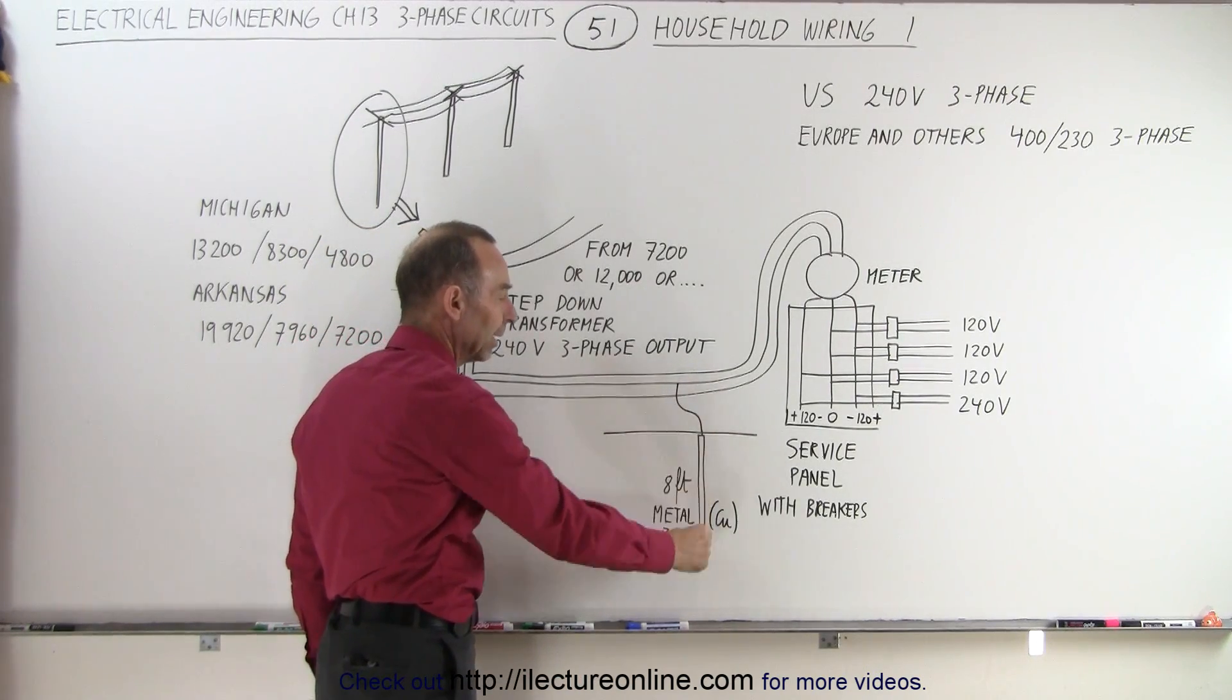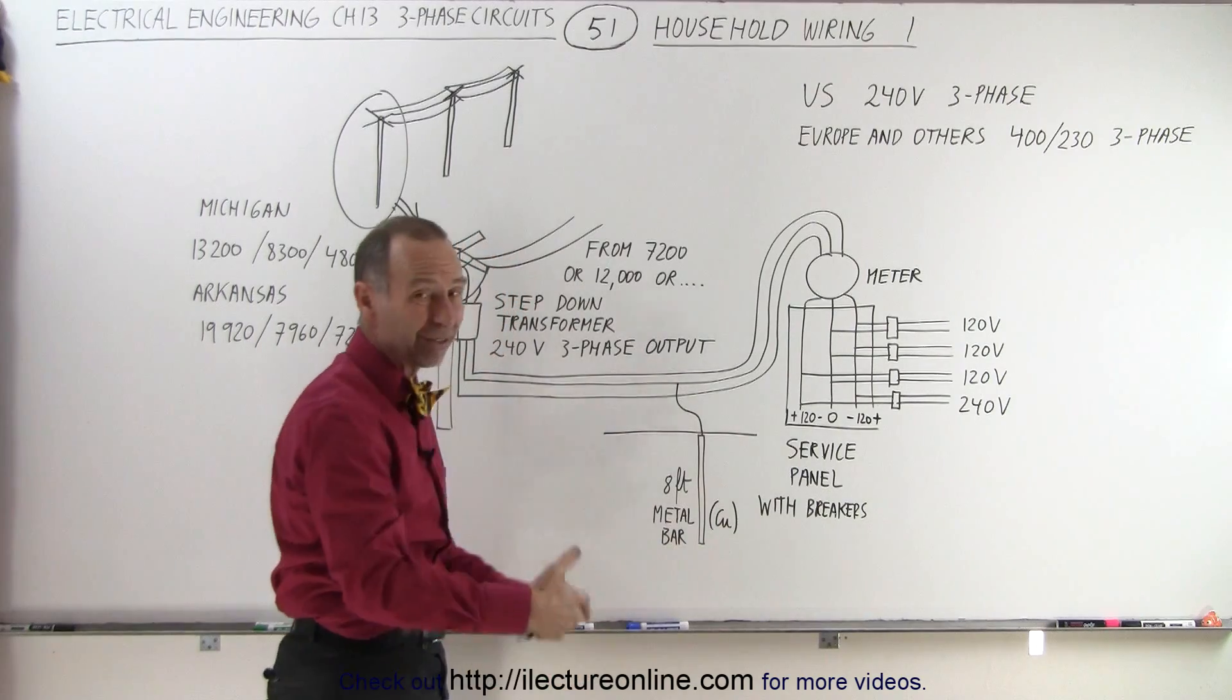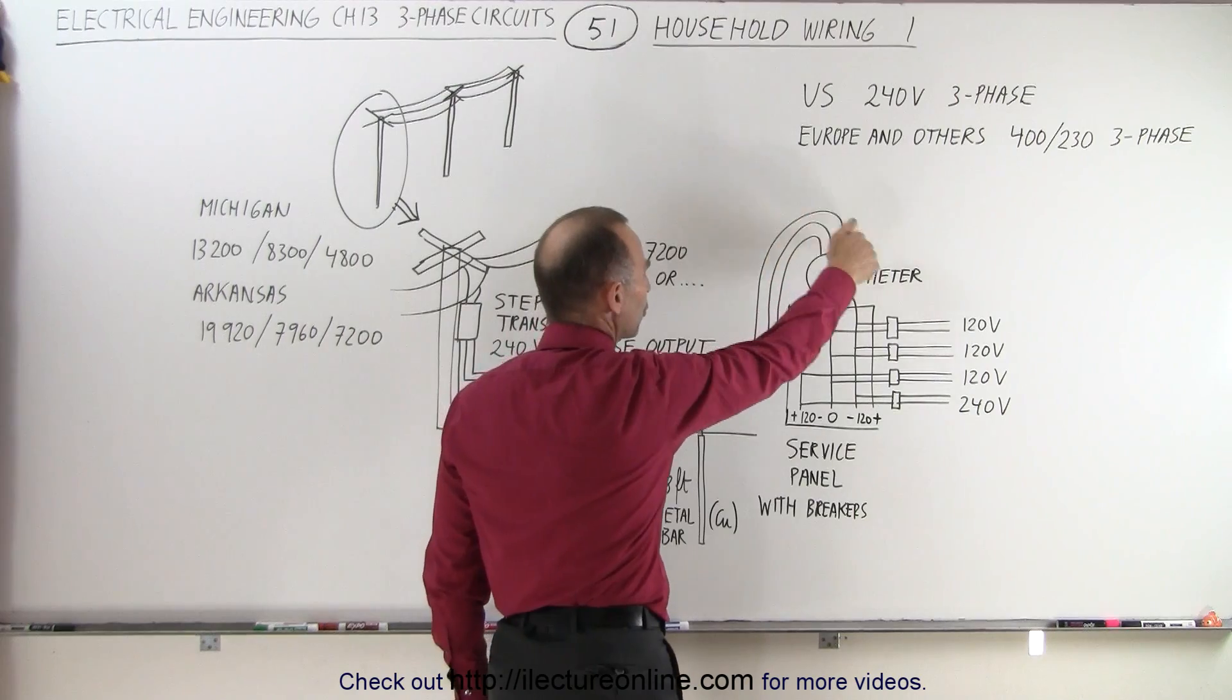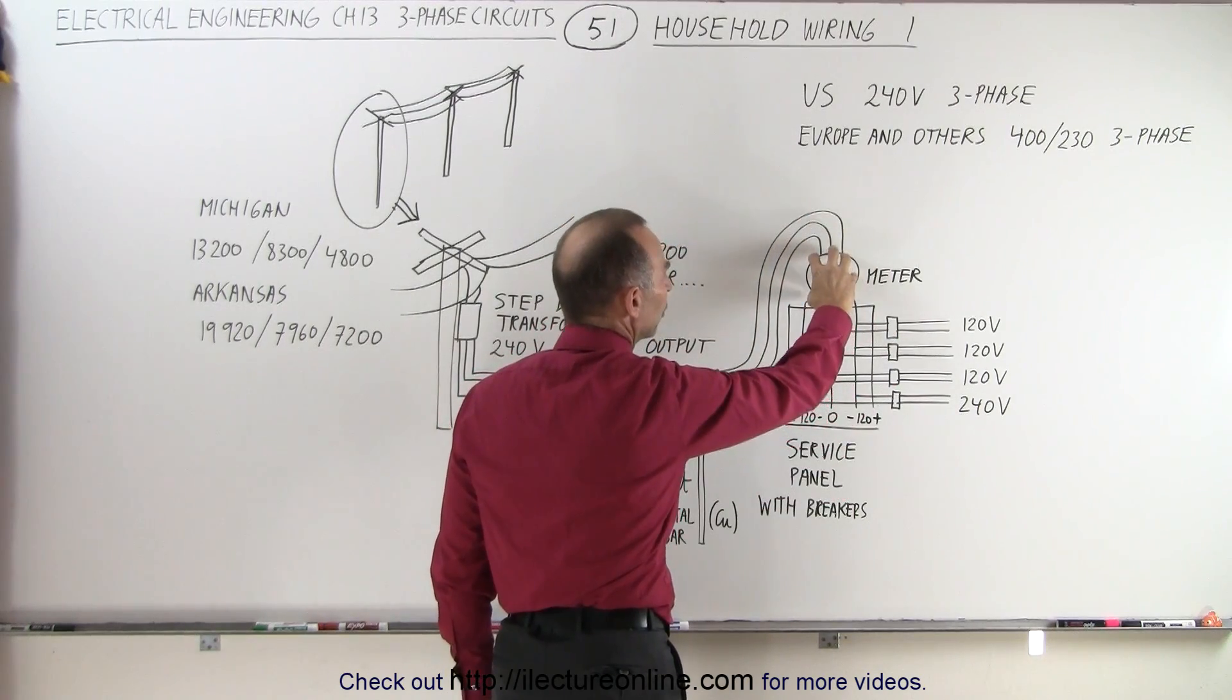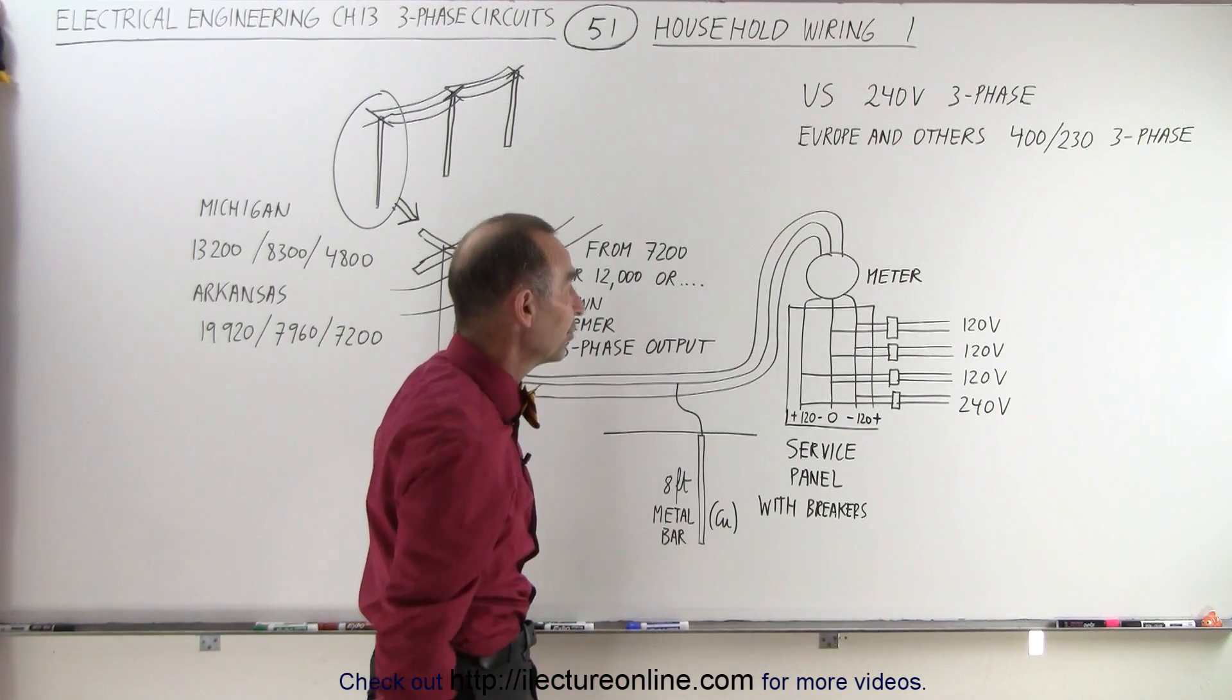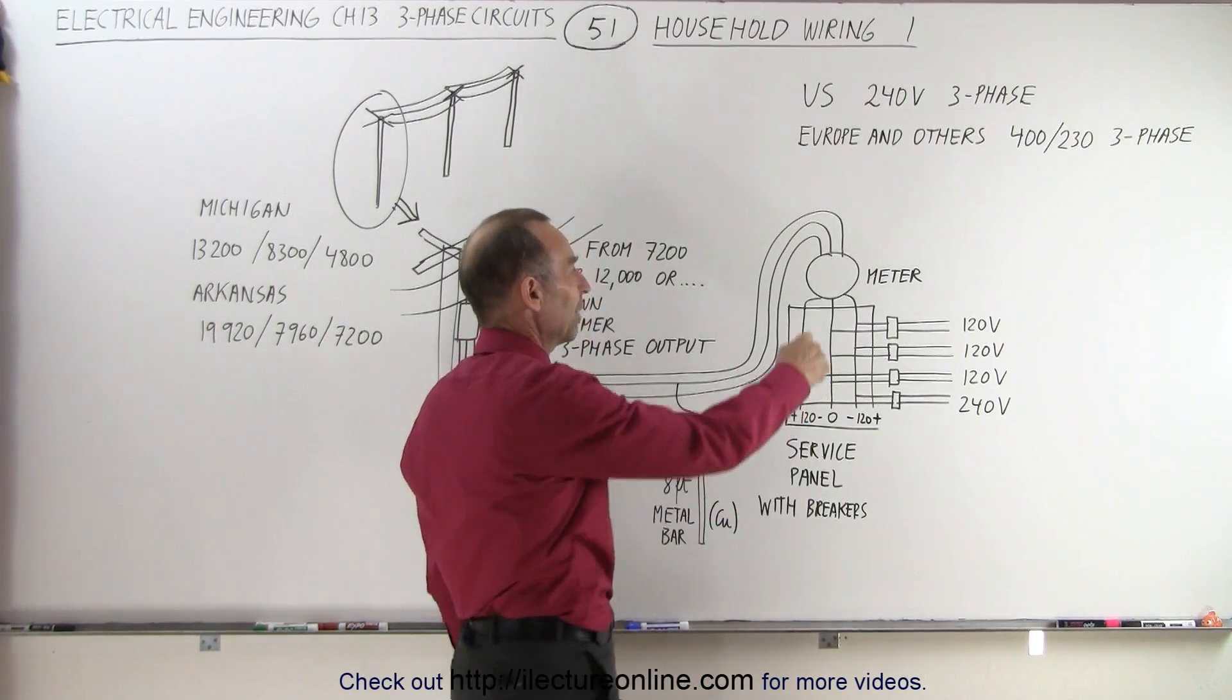And the bar has to be laminated with copper or it can be a solid copper bar if you can find them. Then those wires go to your service panel, which includes a meter where we can tell how much power you've used, how much energy you've used in terms of electricity, so you can pay your bill every month.